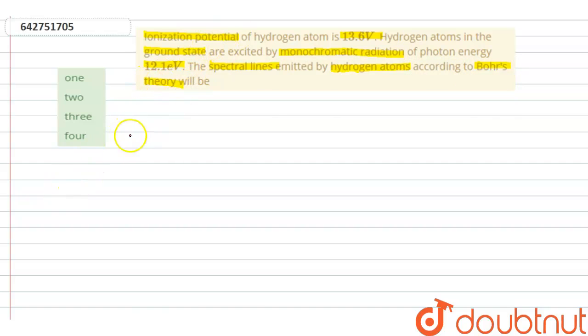Given: ionization potential of hydrogen atom is 13.6 volts, so we can write I.E. equals 13.6 volts. At ground state, energy of electron in hydrogen atom, E equals negative 13.6 electron volts.